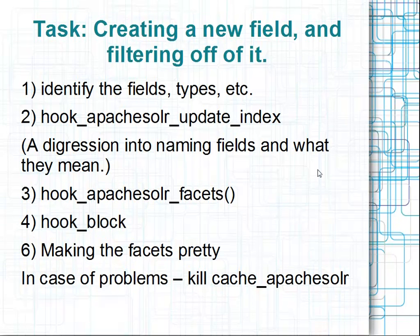This last bit here is important. If you're playing around with these facets and nothing's changing even though you keep clearing cache, watch out — the cache_apache_solr table, at least as of a month ago, was not properly wired up to the usual hooks to say 'clear this table when you do a clear cache.' You actually have to go in and truncate the table by hand. I believe I remember seeing that it was going to be fixed in the next release of Apache Solr, with a ticket that had been applied with a patch, but in the current release version it doesn't.